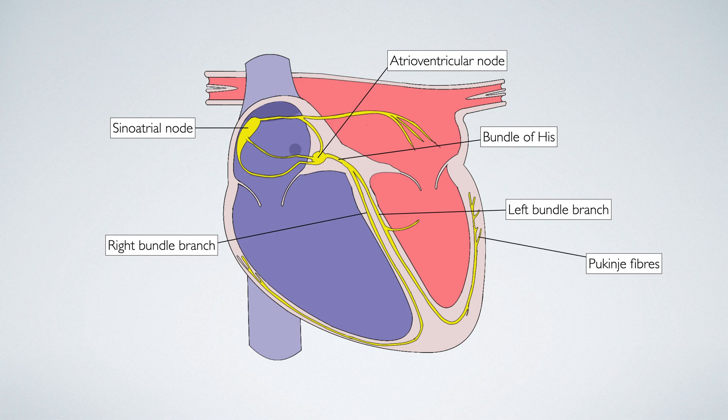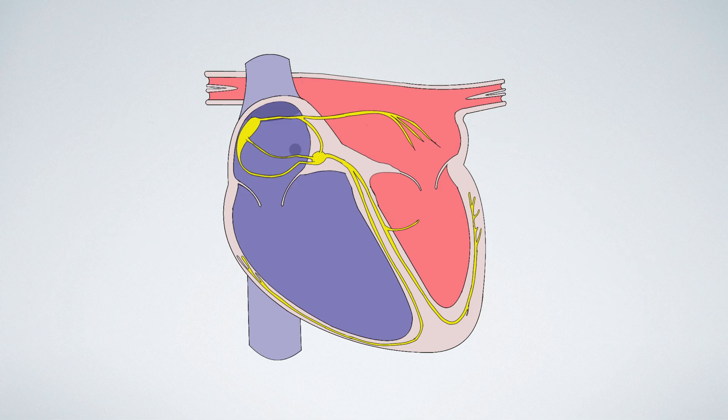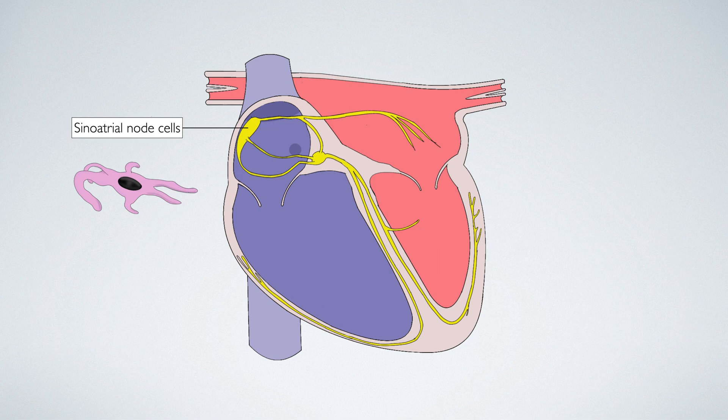And these fibres allow conducted electrical signals to penetrate different areas of the ventricular muscle. In addition to the gross anatomy of the conduction system, there are important cells within the heart that contribute to electroconduction. Sinoatrial node cells are the pacemaker cells of the heart. We'll talk more about these shortly.